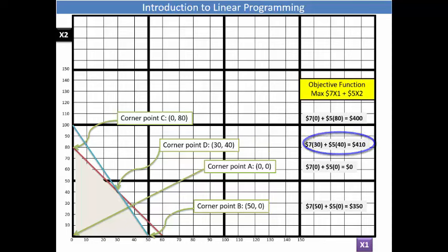Corner point A results in $0, and finally, corner point B gives $350. Corner point D is the point where profit is maximized. The firm will then produce 30 units of headphone 1 and 40 units of headphone 2 in order to maximize profit.